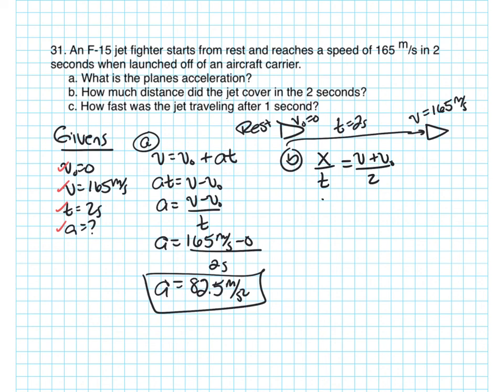And I want to find X. So let me isolate X. X is equal to V plus V-naught times T divided by 2.